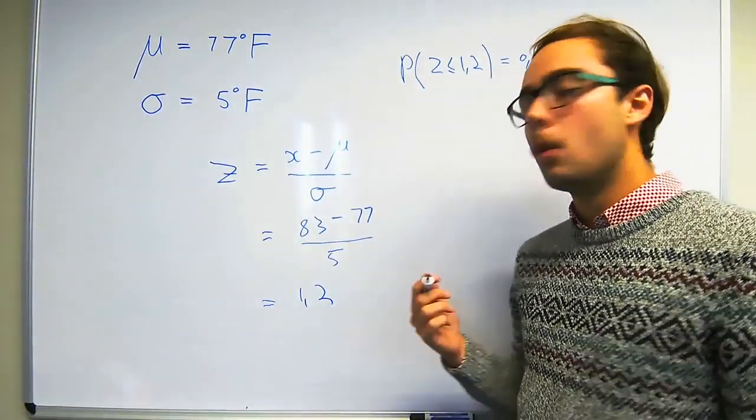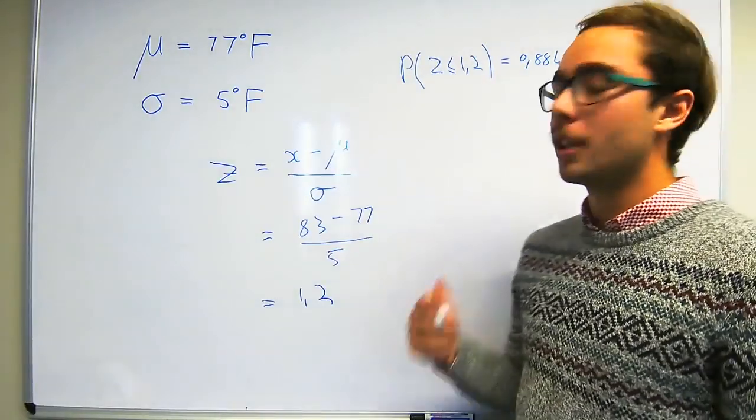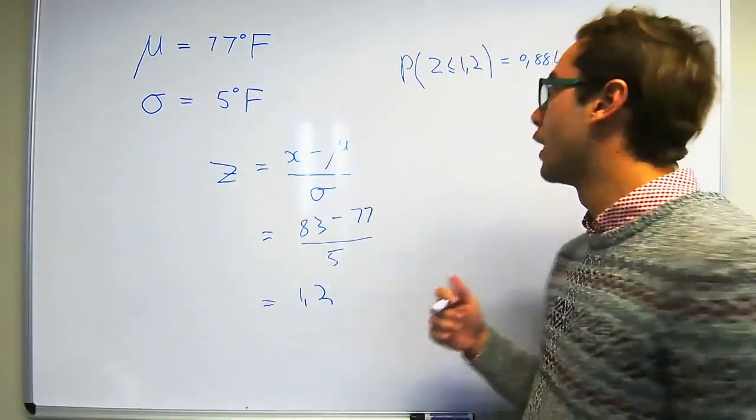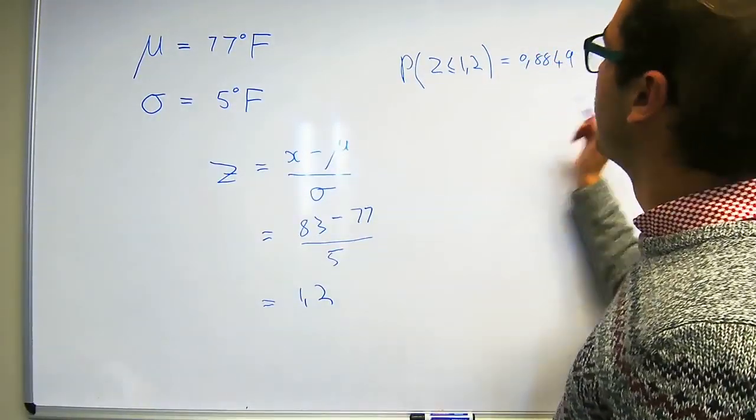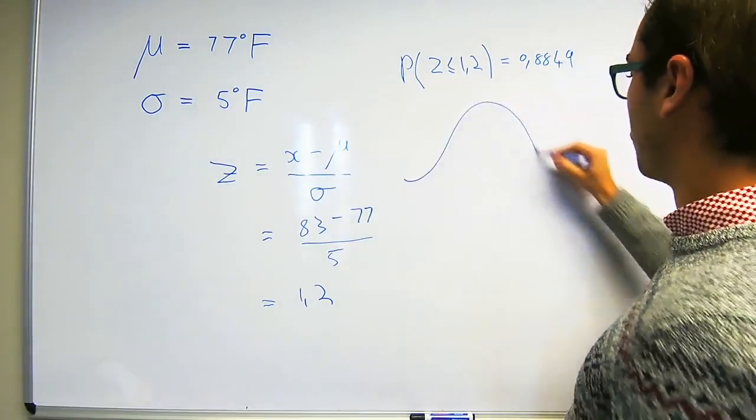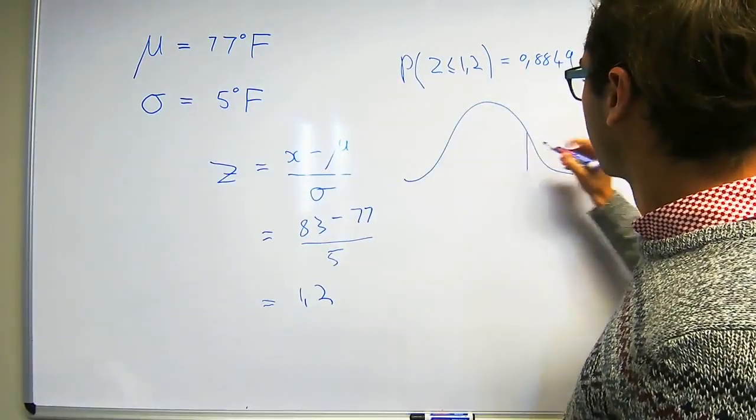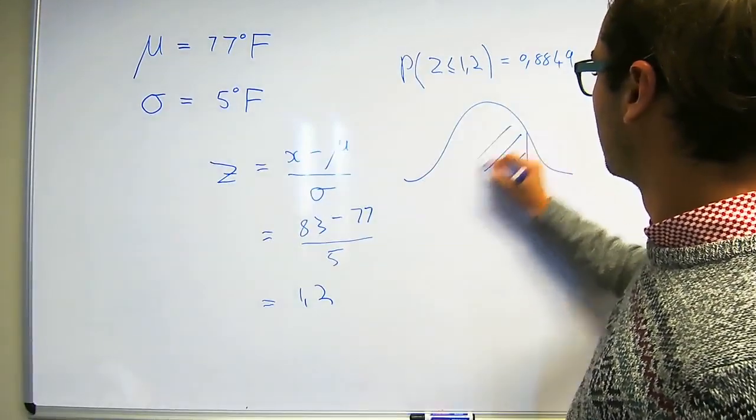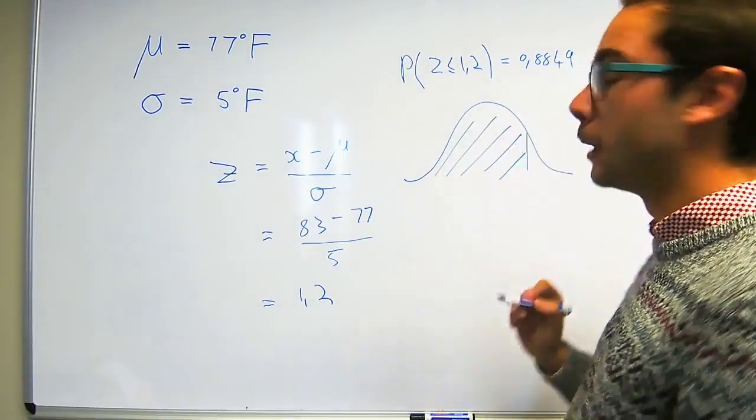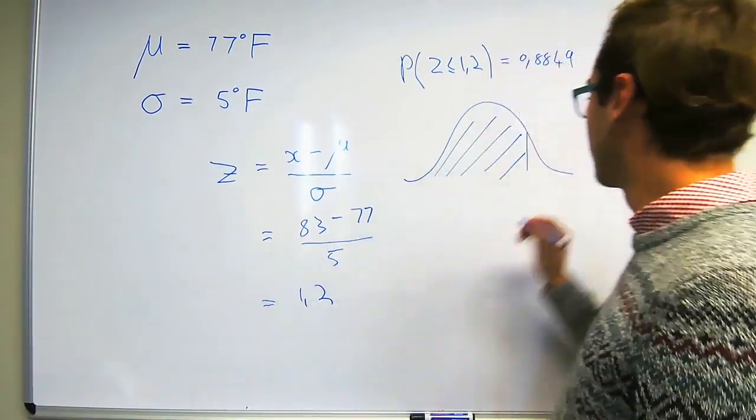However the question asks us what is the probability that the temperature is higher than 83 degrees Fahrenheit. So for that reason, if we look at the normal distribution quickly, the z table gives us the probability that it is lower than 83 degrees Fahrenheit.